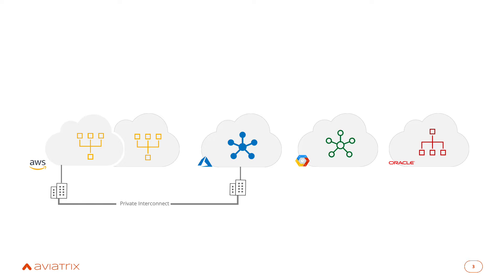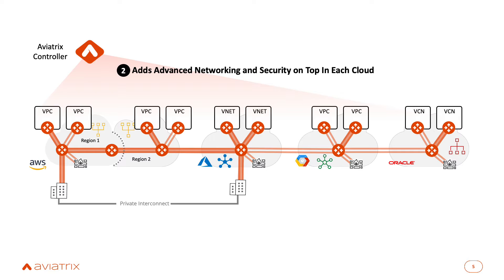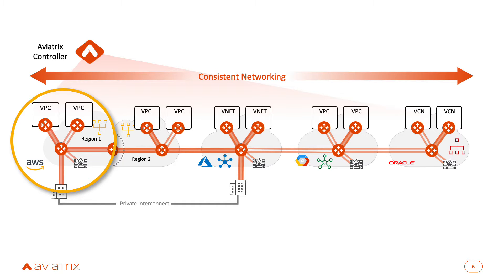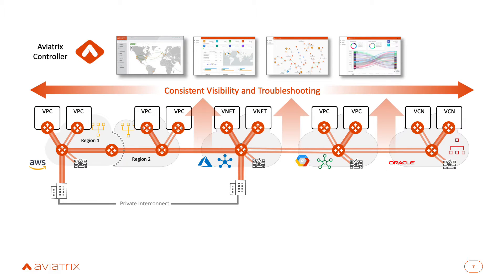What we do is cloud networking, and the way you build networking in each one of the clouds is different because the underlying constructs in each cloud are different. The first thing Aviatrix does is programmatically leverage and control the native constructs to create an abstraction layer that simplifies the ability to manage networking in each cloud. We then add advanced networking and security on top and make it consistent across all clouds, so you can build the network in AWS the same as in Azure, the same as in Google. We also support Oracle and Alibaba clouds.